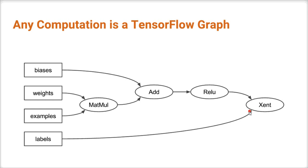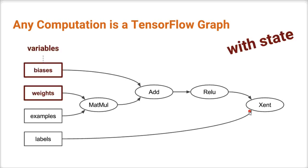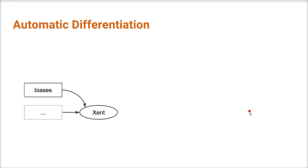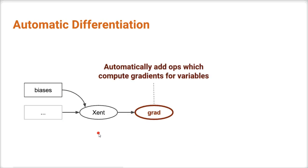Usually you can think of this graph as a data flow graph, which is a concept most of you may be familiar with. But in TensorFlow, we have the additional advantage that the graph actually contains all of the state. The variables are part of the graph — they're just regular nodes, not just like everything else. And because we have the variables in the graph, we can do things like automatic differentiation. I can tell TensorFlow to compute the gradients of this output of the cross-entropy with respect to the biases, and create graph nodes that do that computation. TensorFlow can do that because the graph is straightforward to analyze, and for each operation we also implemented the gradient. Since TensorFlow knows the chain rule, it can compute this gradient.